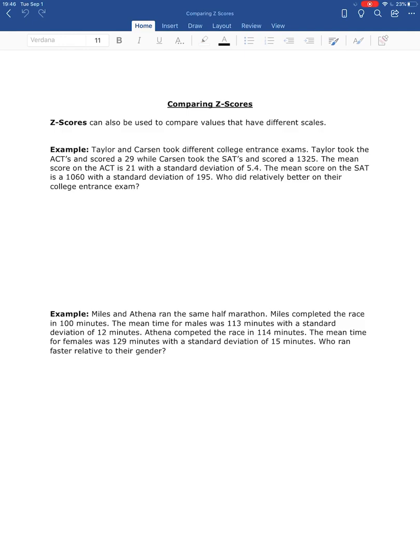So these are on different scales, the ACT and the SAT. The ACT is out of 36, and the SAT is out of, I don't know, but not 36. So we want to know who did better, and the only way we can really compare those is to calculate their Z-scores.